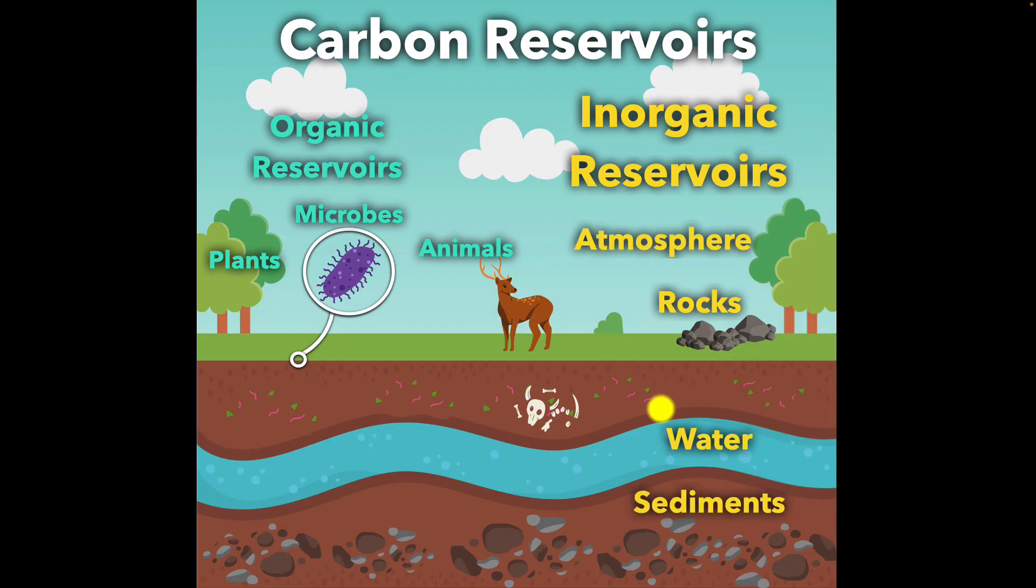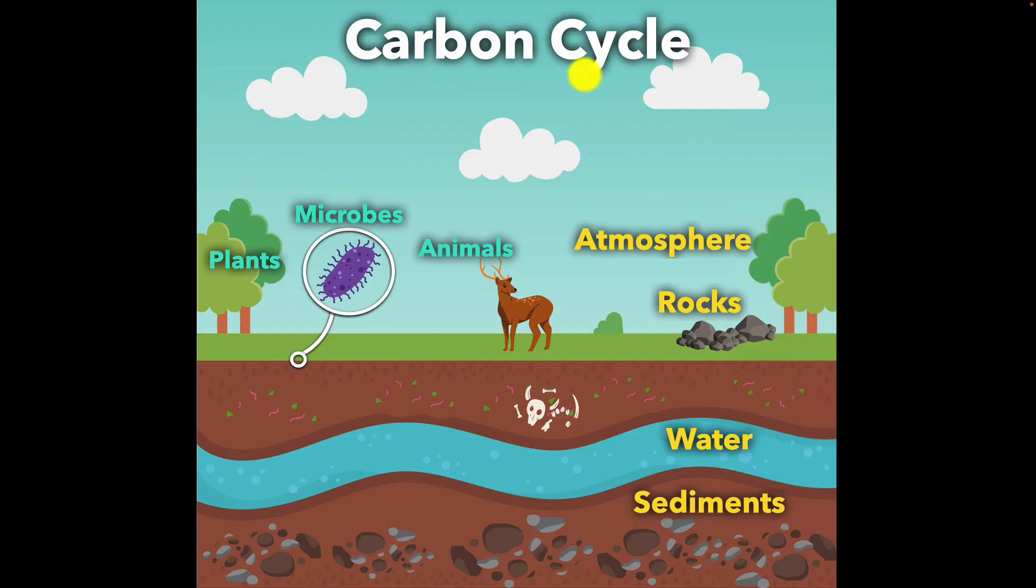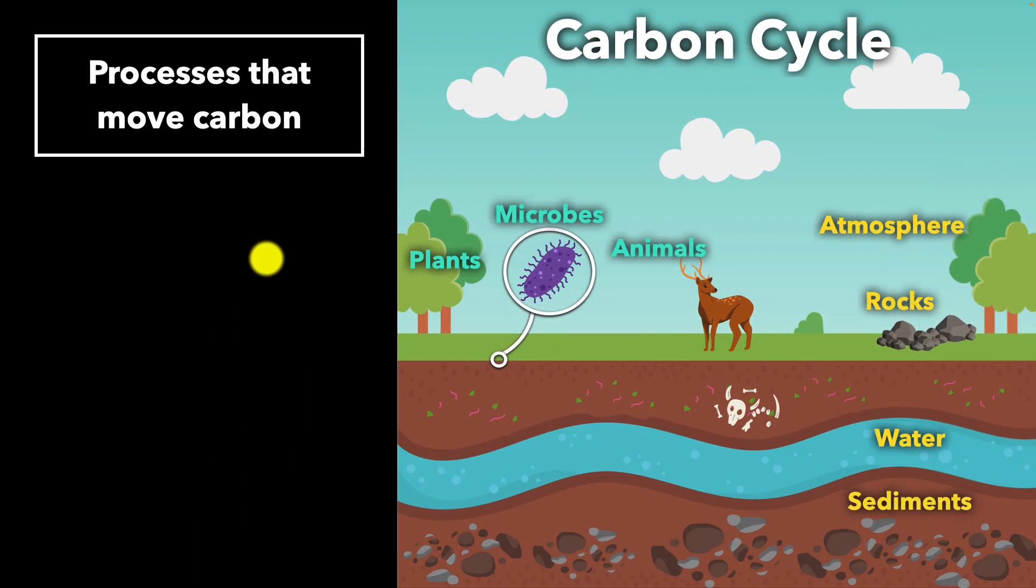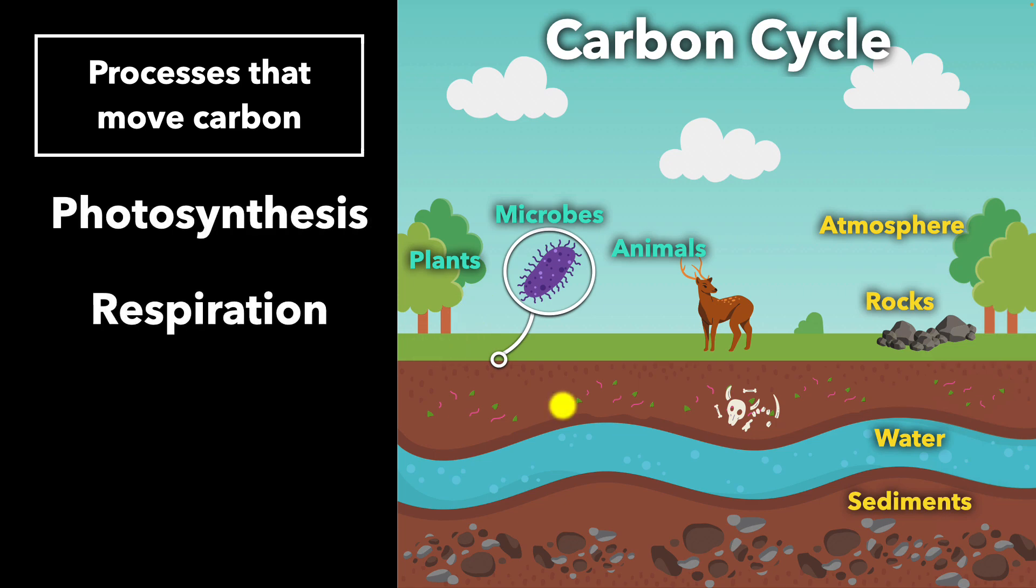But what's interesting is that carbon moves from one reservoir to another in a cycle. So we call this the carbon cycle. But how does it move, you ask? Well, there are four main processes that move carbon through the environment: photosynthesis, respiration, decomposition, and combustion.